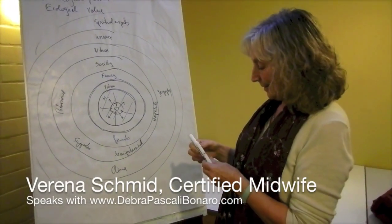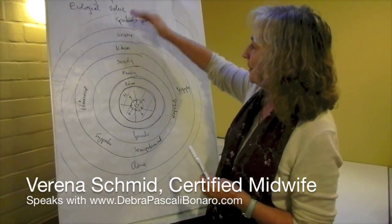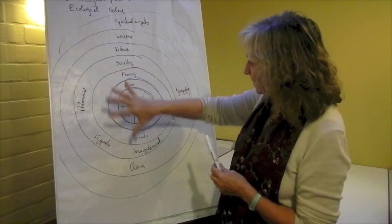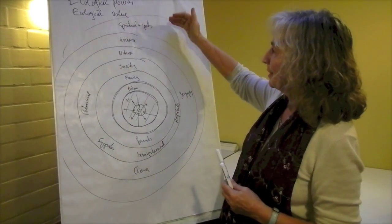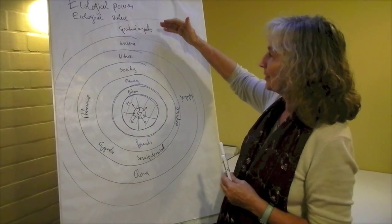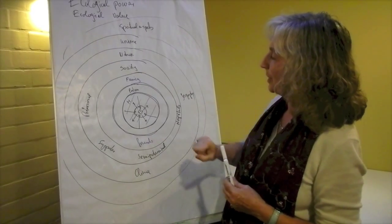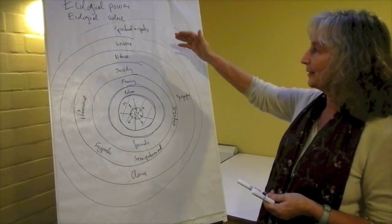So we can see that every circle holds a system inside, and if this would be all good ecological powers, a woman is very well supported. But what happens in reality in our society?